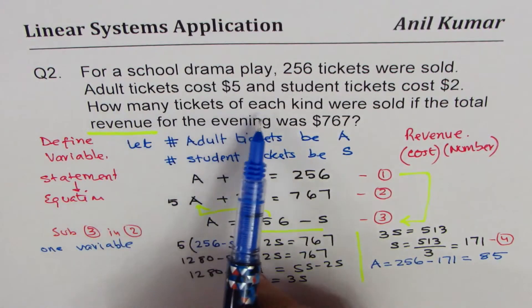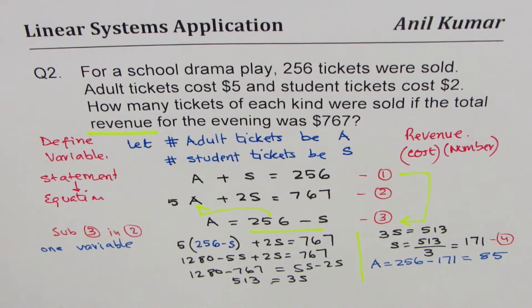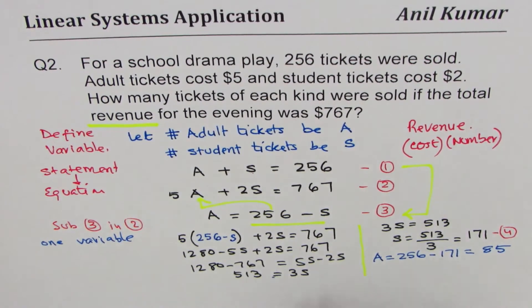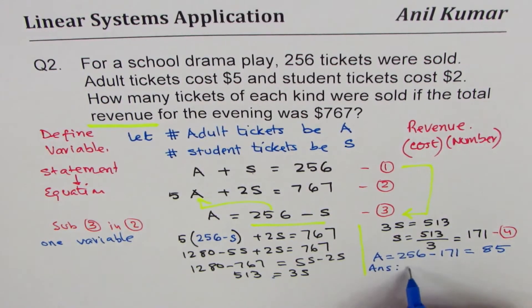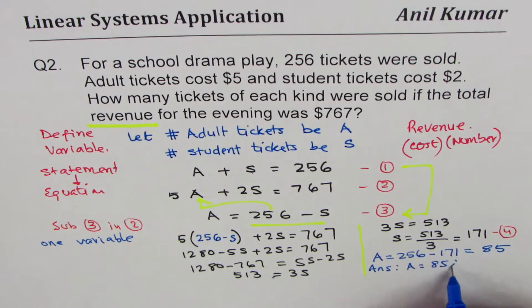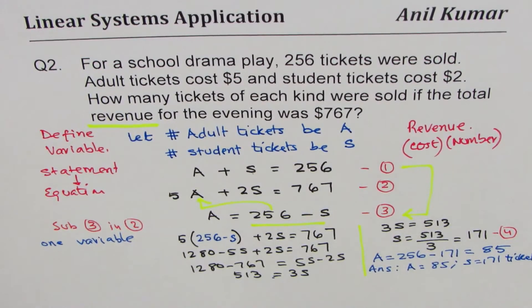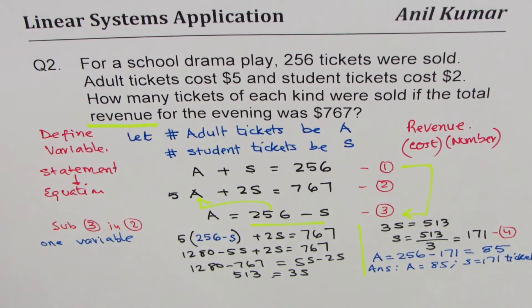So there are 85 adult tickets and 171 student tickets sold. The question is how many tickets of each kind were sold — we can now clearly write our answer: 85 adult tickets and 171 student tickets. That is how you solve word problems. Understand how to define variables, write equations from given statements, and apply substitution or elimination to solve. Don't forget to write the answer clearly with units. I'm Anil Kumar and I hope that helps.